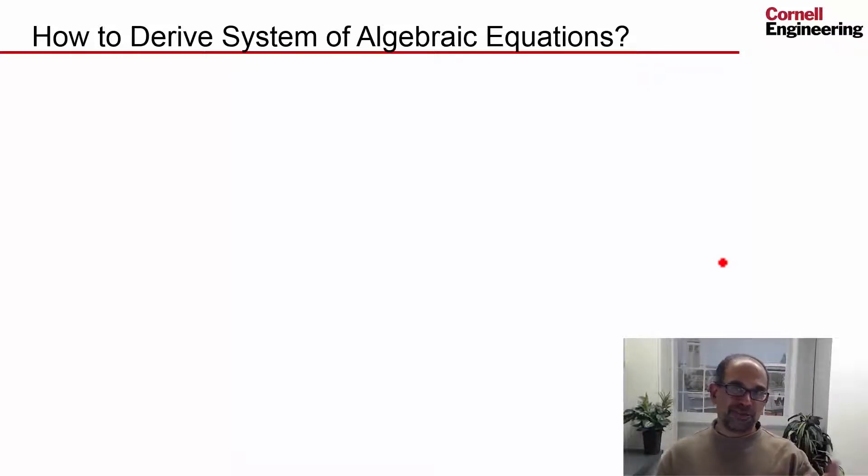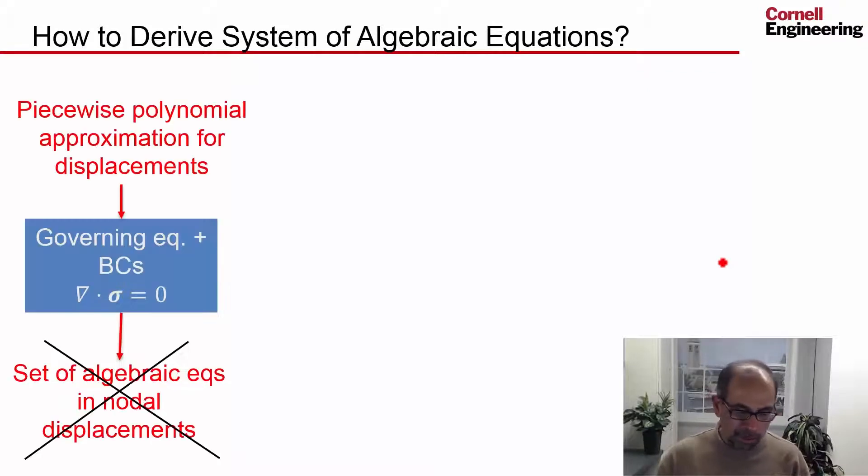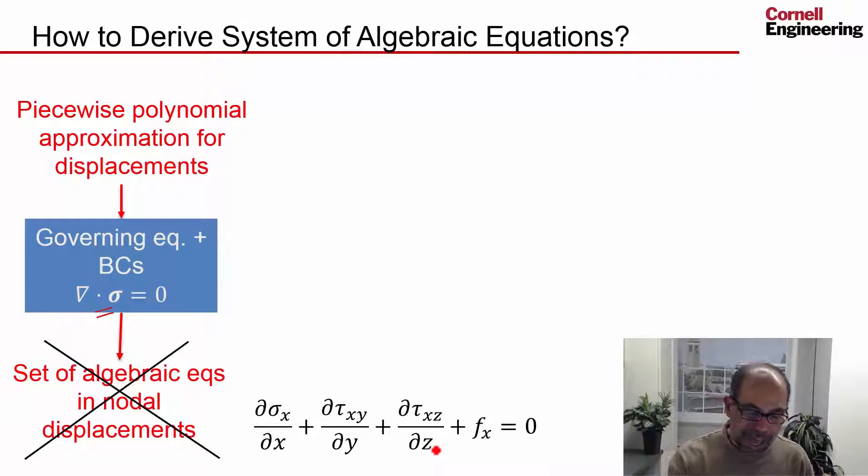So how do we derive this system of algebraic equations? Same idea as before. If you take your equilibrium equations, think of this as a compact way to write the three equilibrium equations. In your mind's eye, when you see that, just think of three equations like that, that we had.